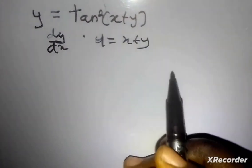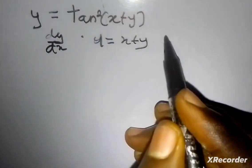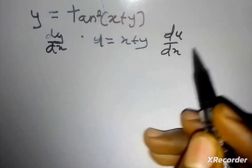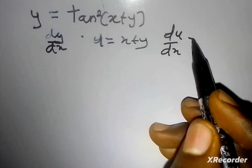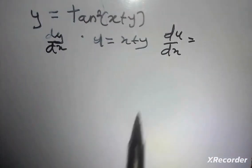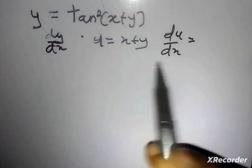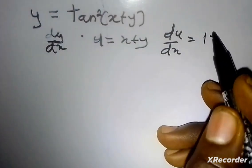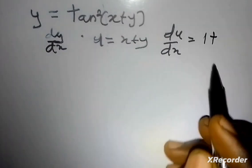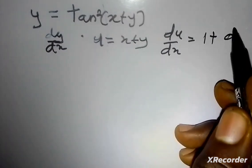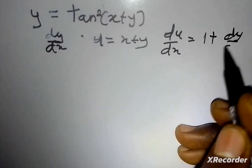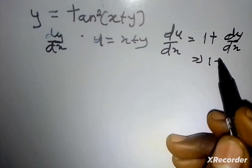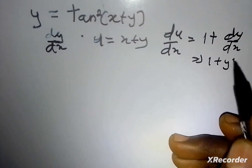The next thing I'm going to do is find du/dx. If I differentiate x with respect to x, I get 1, plus if I differentiate y with respect to x, I get dy/dx. This gives me 1 plus y prime.